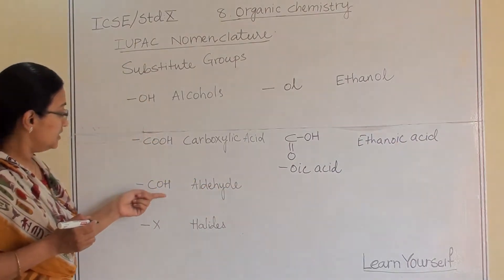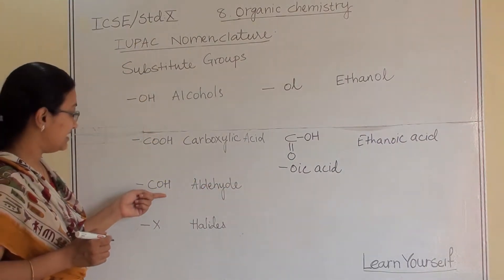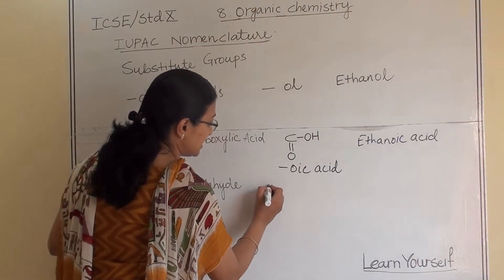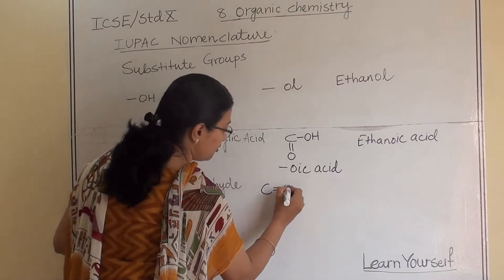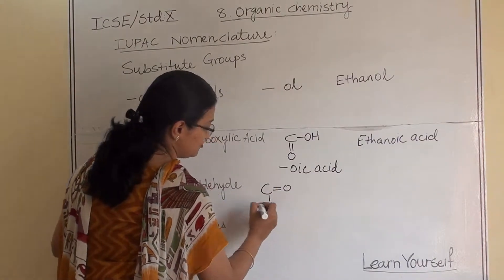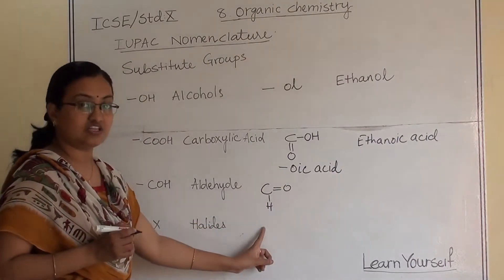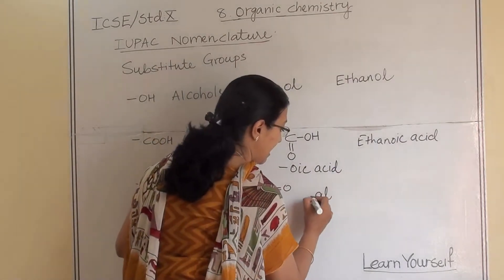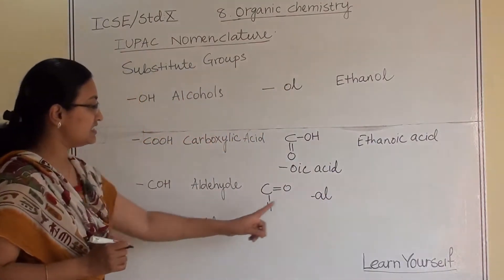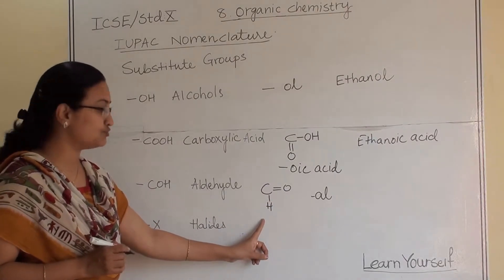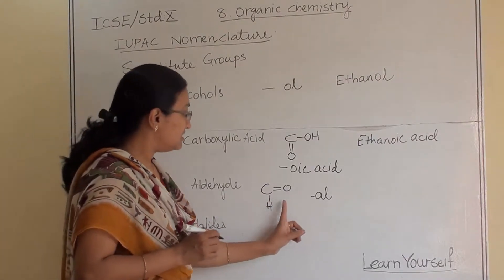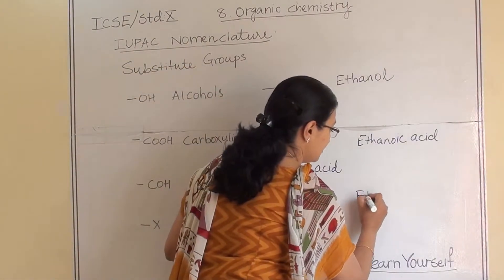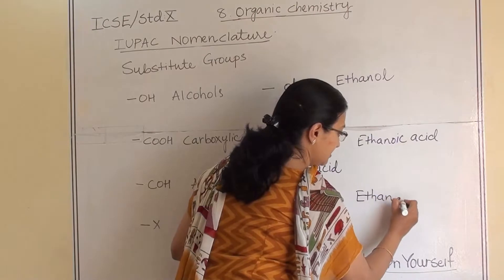The third one is aldehyde. In aldehyde, carbon is attached to oxygen with a double bond and to hydrogen with a single bond — this is the CHO structure. It gives the suffix '-al'. When this structure is attached to ethane, the name becomes ethanal.